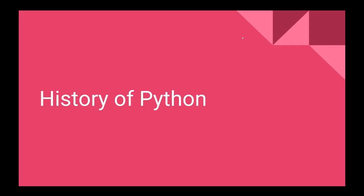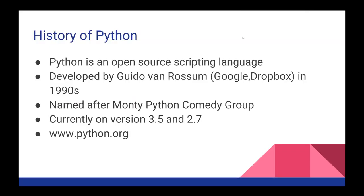Let's talk about a very brief history of Python. Python is an open source scripting language, which is nice because that means you don't have to pay for it. It was developed by a man named Guido Van Rossum. He worked at Google initially and then now works at Dropbox, and it was developed by him in the 1990s. It was named after the Monty Python comedy group, which he was a big fan of.